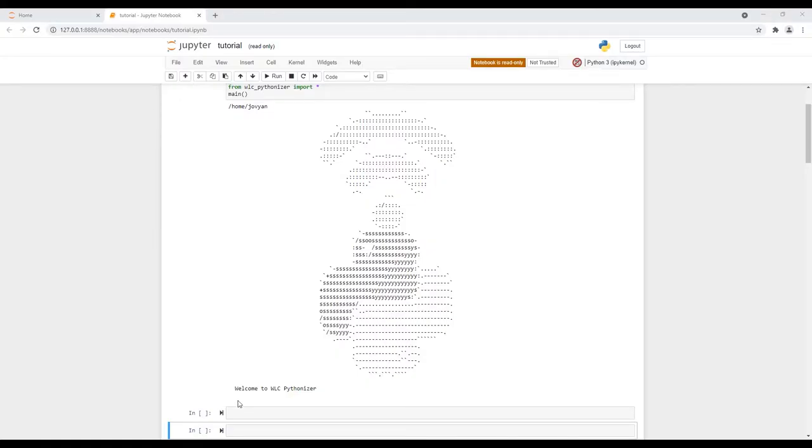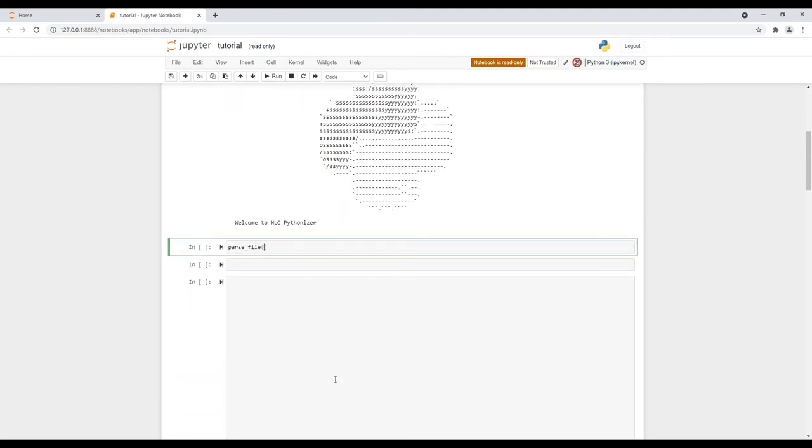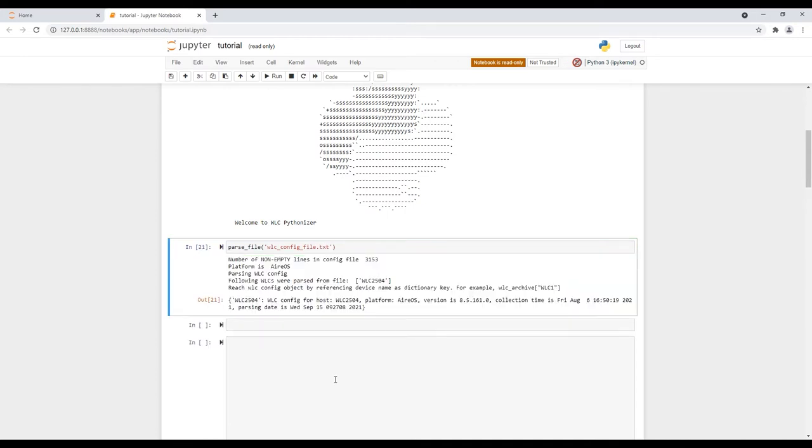In this demo, we will see how to import the data into the tool. First of all, let's try to import the data from the local file. We just need to call the command parse_file and add as an argument the file path and file name to the local file which contains the device config. We can see the device was successfully parsed from the file.